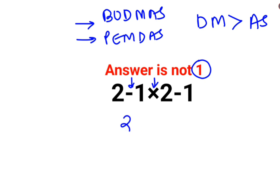So we'll keep 2 as it is. Minus 1 multiplied by 2 is minus 2, minus 1. Okay? So next,